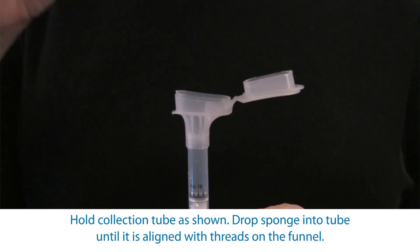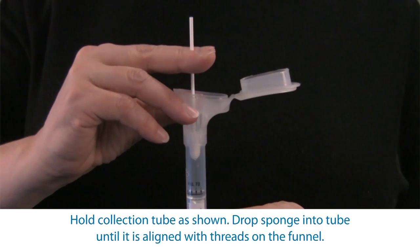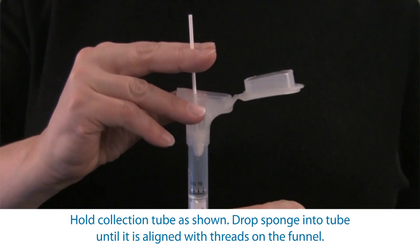Hold the collection tube in one hand as shown and drop the sponge head partway into the tube so that it's aligned with the threads on the funnel.